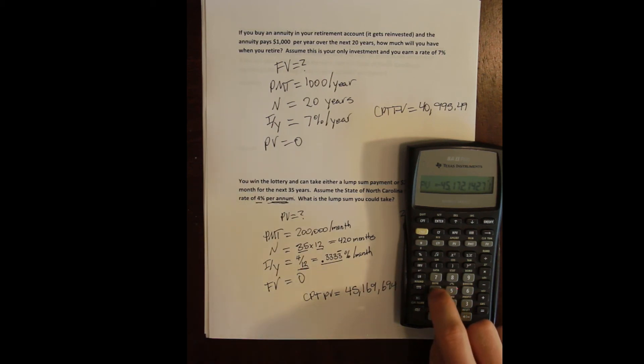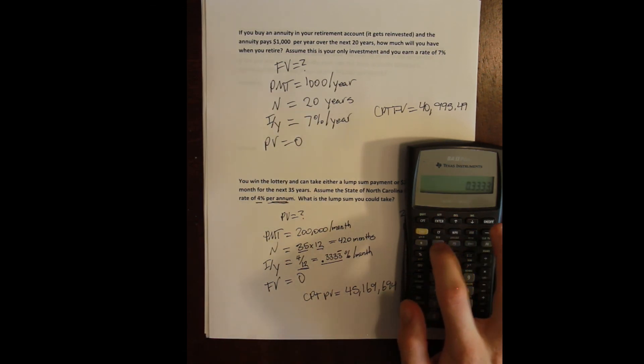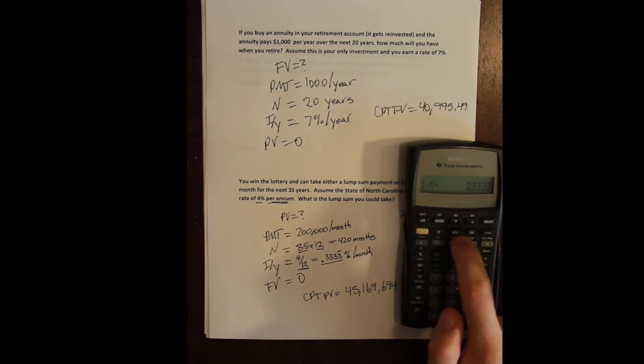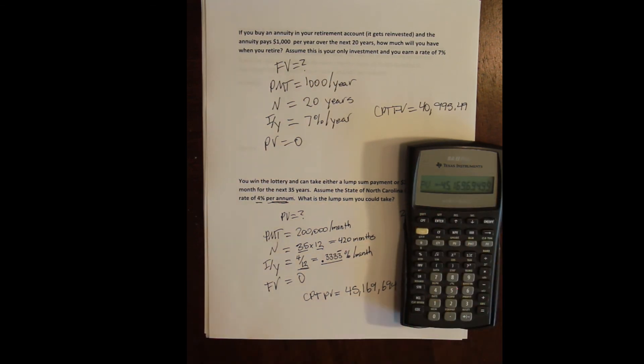If instead I do 4 divided by 12 and set that so that I don't have any rounding, I get the answer displayed here. So because of the size of the cash flows and the length of n, the rounding difference between 0.333 and 0.3333333 is several thousand dollars.